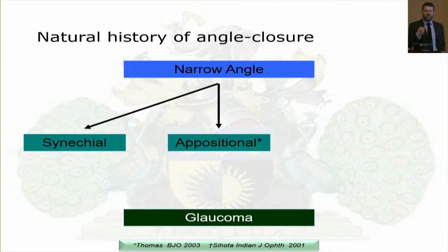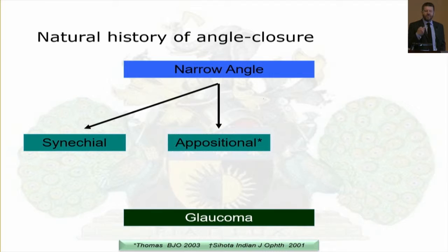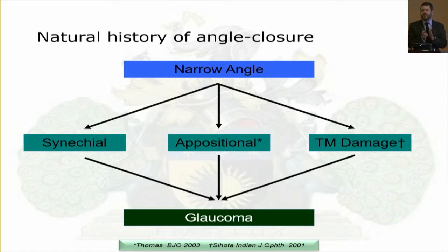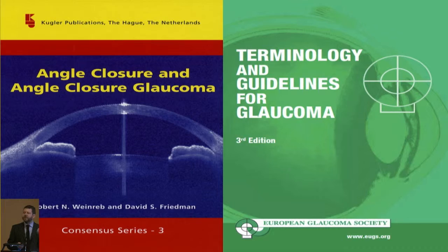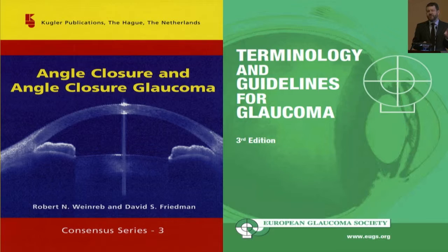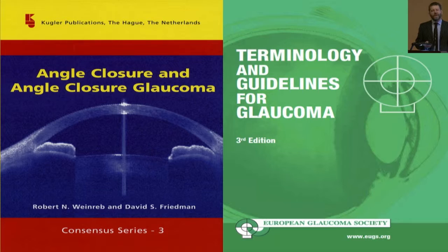The narrow angle can cause synechial or appositional closure, or intermittent contact between the iris and trabecular meshwork can cause damage, impairing aqueous outflow temporarily, acutely, or chronically, leading to glaucomatous optic neuropathy. The international and European guidelines for angle closure are now out of date because they do not currently incorporate the findings of the EGLE trial or three big trials from Singapore — useful for terminology, but we must be careful in updating treatment guidelines.